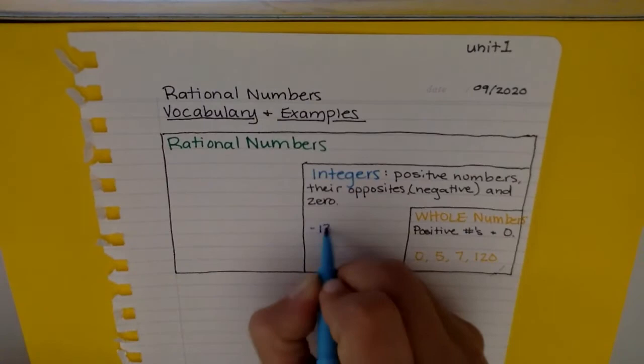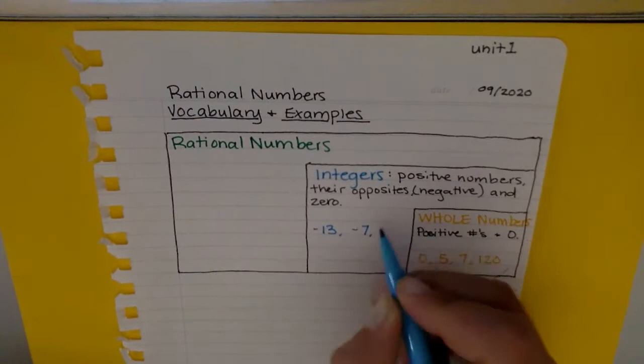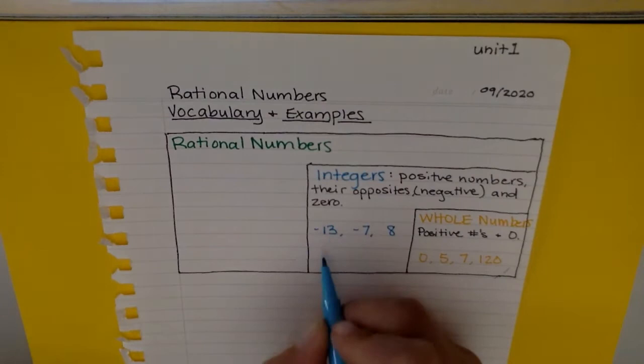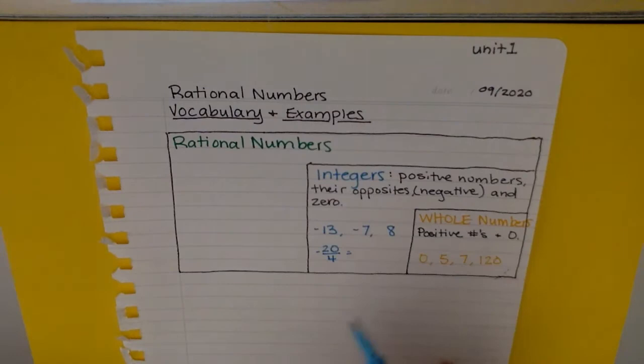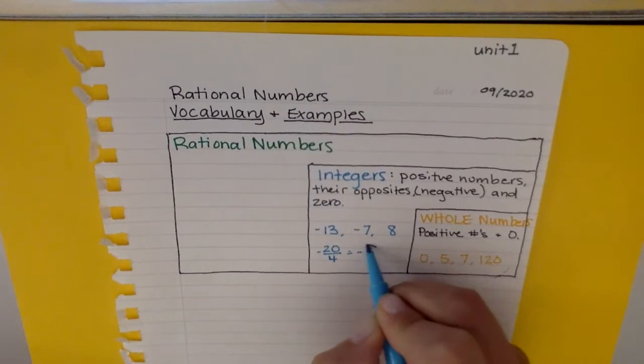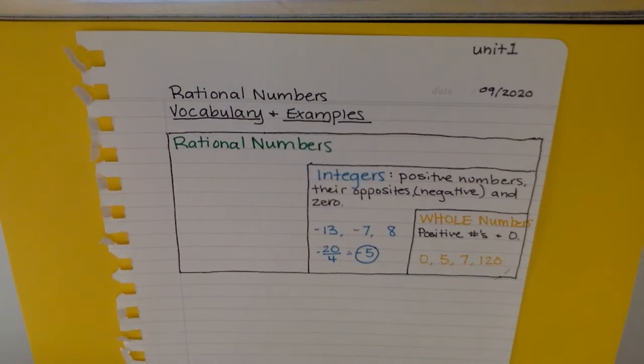So positive numbers, their opposites which are negative, and zero. For my examples I'm going to say negative thirteen, negative seven, we could do a positive eight. I'm going to put a crazy one in here: negative twenty divided by four. The reason that one, even though it's written as a ratio, is still an integer because actually once I divide this, this is going to equal negative five, and that negative five is a whole number. It's just right now written as a ratio. It is negative five.